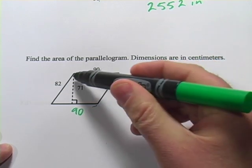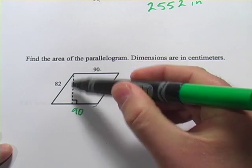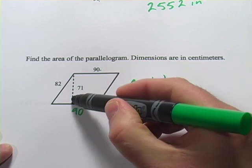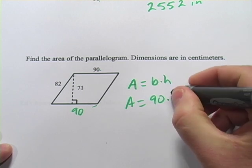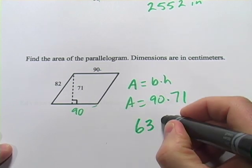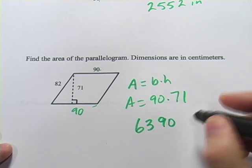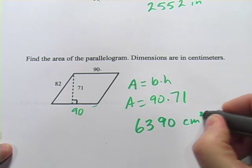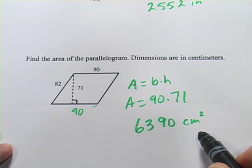And our height is this dashed line dropped here from the corner down to the opposite side at a right angle. And that's 71. So 90 times 71, and that should be 6,390. And this was centimeters, so that'll be square centimeters when we get area.